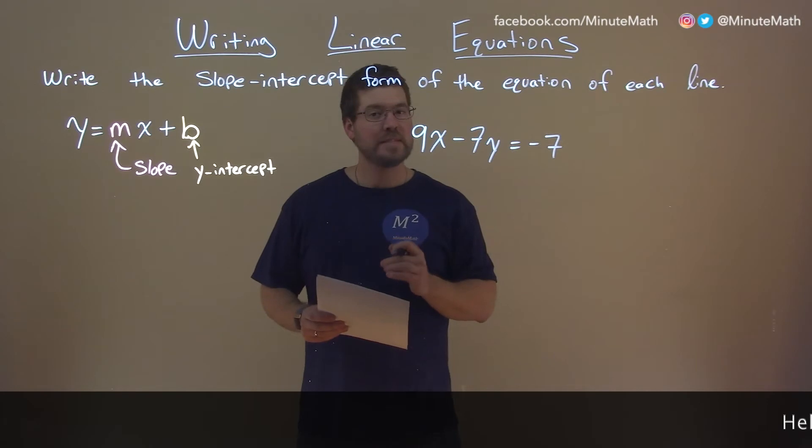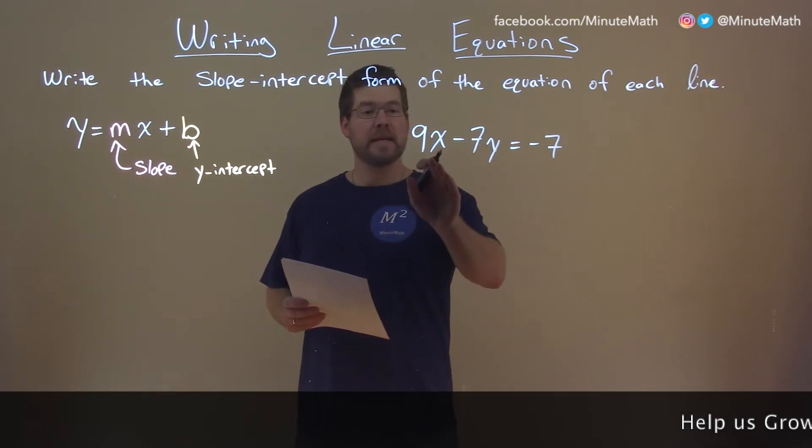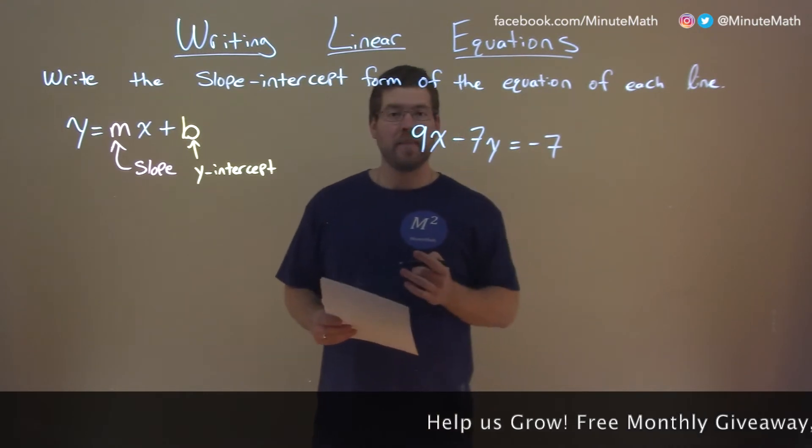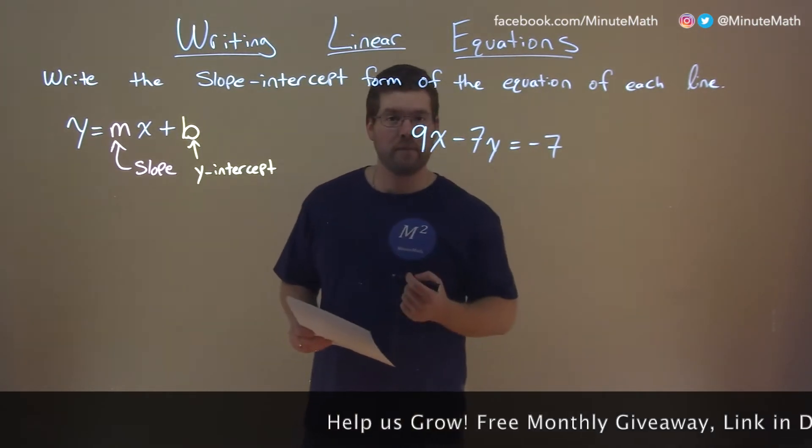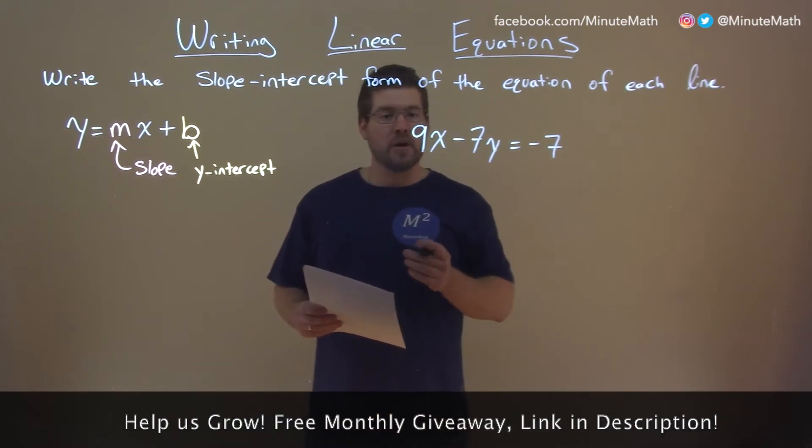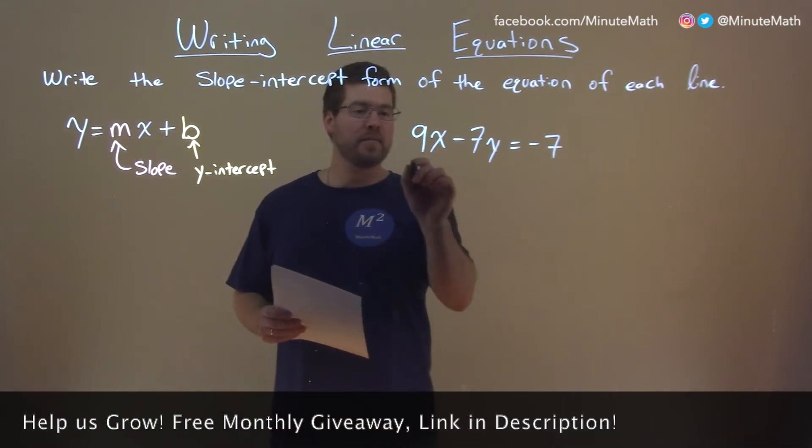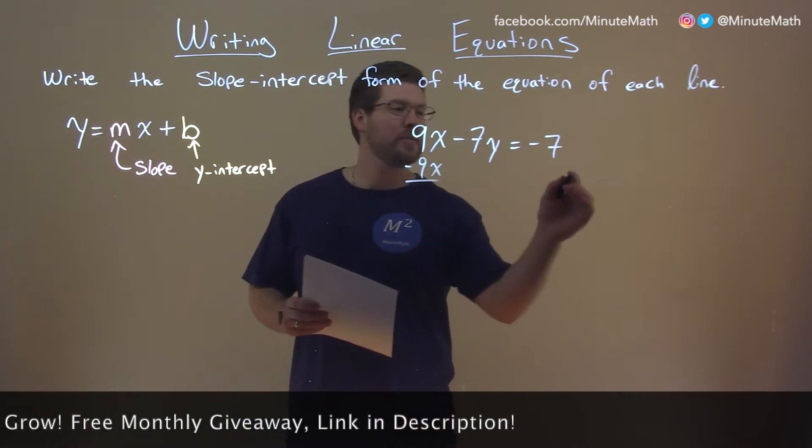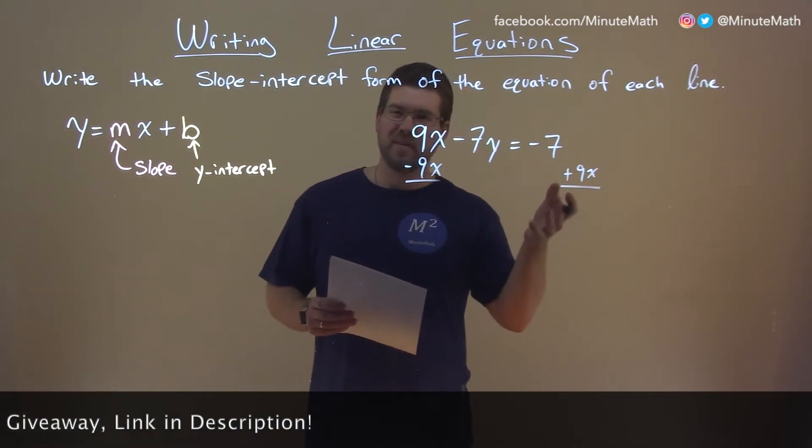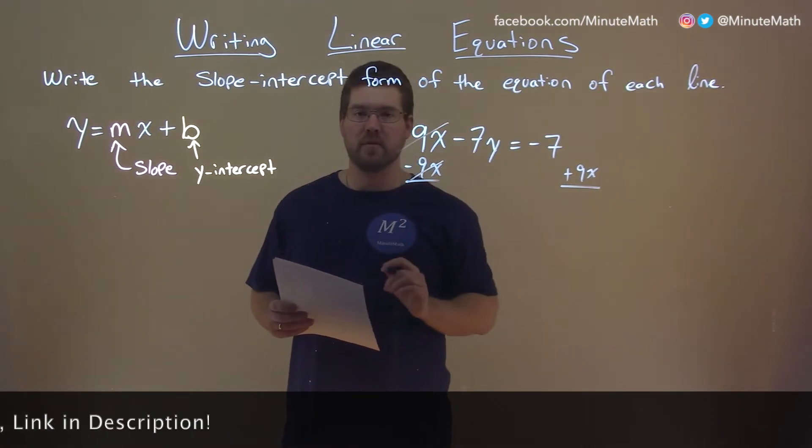So if I was given this problem: 9x minus 7y equals negative 7, I need to write that in slope-intercept form. Main goal here: get y by itself. So we have a positive 9x here, let's subtract that to both sides. Not like terms here, can't really combine them, but it cancels that out.